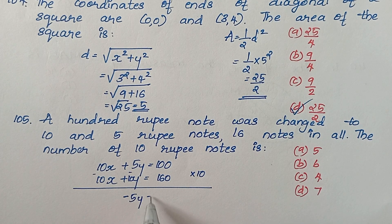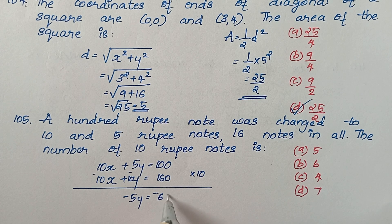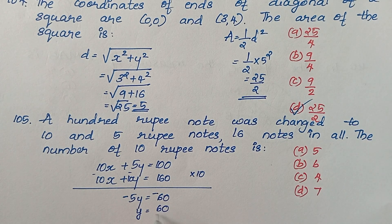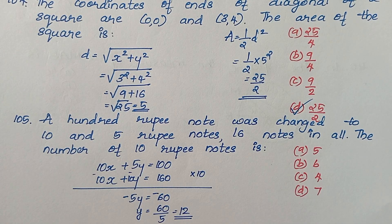Subtracting the equations gives −5y = −60, so y = 12.